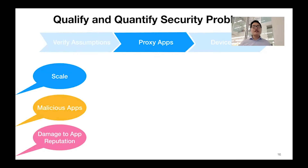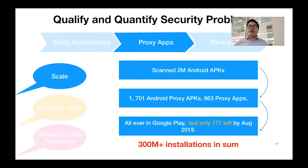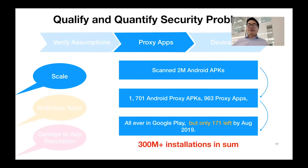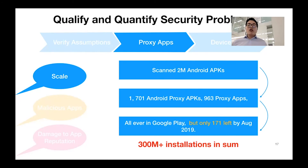We then moved forward to profile the security risks related to proxy apps. To start, we needed to identify real-world proxy apps. In our study, we extracted a set of robust signatures for proxy SDKs and leveraged those signatures to scan more than 2 million Android APKs, among which we identified 1,700 Android APKs that have integrated at least one proxy SDK. Those APKs belong to almost 1,000 Android apps. All those Android apps had shown up in Google Play at some point, but by August 2019, only 171 were still available. Even for those still available, their installations in some cases exceeded 300 million.